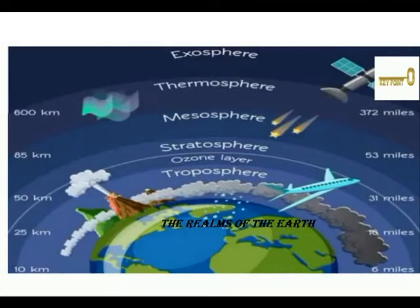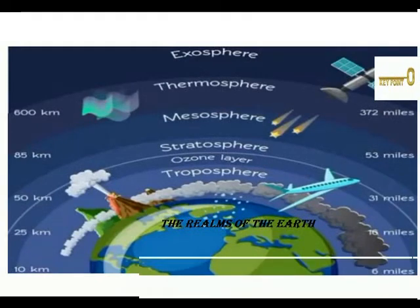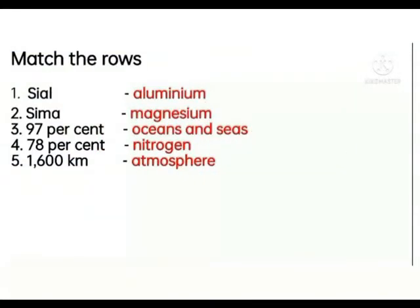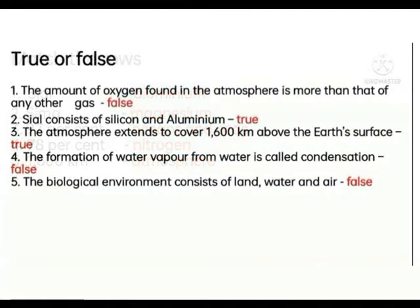Grade 6 Standard Social Geography, Lesson 17, Part 2. Match the roles: CL — Aluminium Sima — Magnesium. 97% — Oceans and Seas. 78% Nitrogen. 160 kilometer atmosphere.